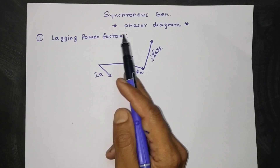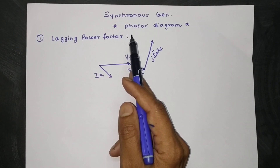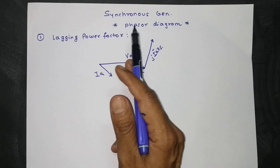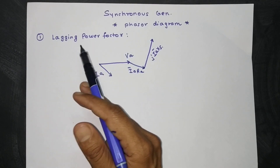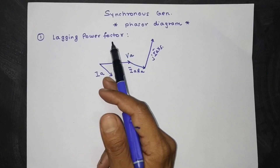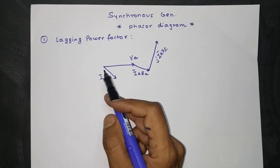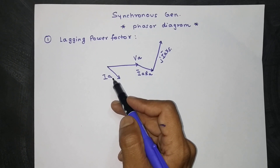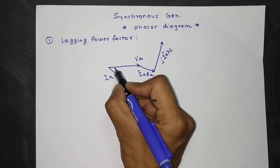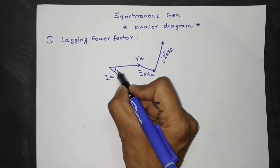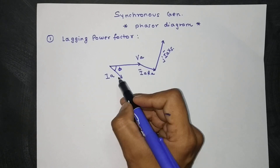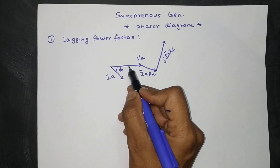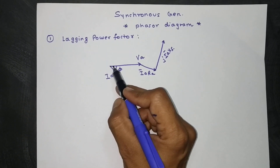In this video we will discuss the phasor diagram of synchronous generators. First we will see the lagging power factor case. In this case, the angle between the terminal voltage and the armature current is the power factor angle phi, and IA is lagged by the terminal voltage.